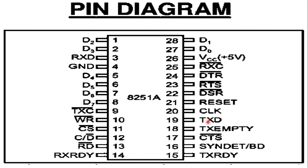Pin number 25 is RxC (Receiver Clock), which controls the rate at which characters are received. D0 to D7, at pin numbers 27, 28, 1, 2, 5, 6, 7, and 8, form the 8-bit data bus. In addition, pin number 26 is VCC, which is the +5V power supply, and pin number 4 is GND (ground), which is the return path. These are the pin details of the 8251 USART.